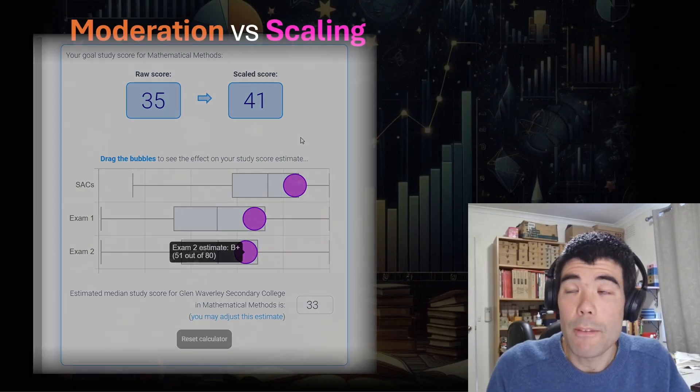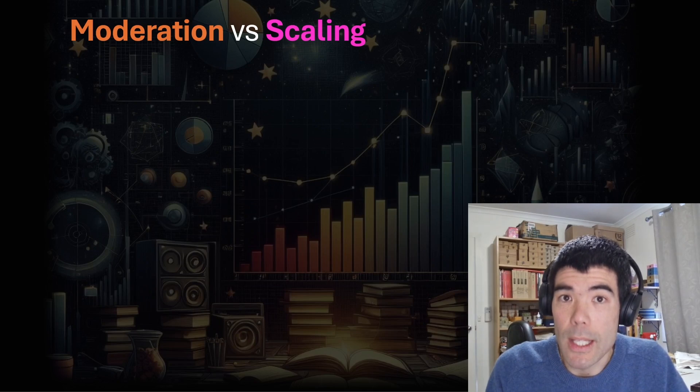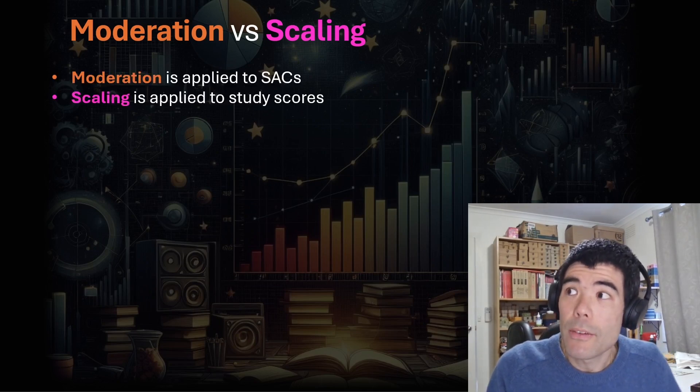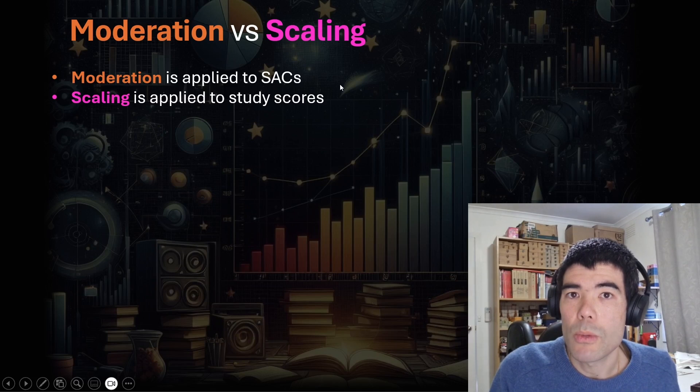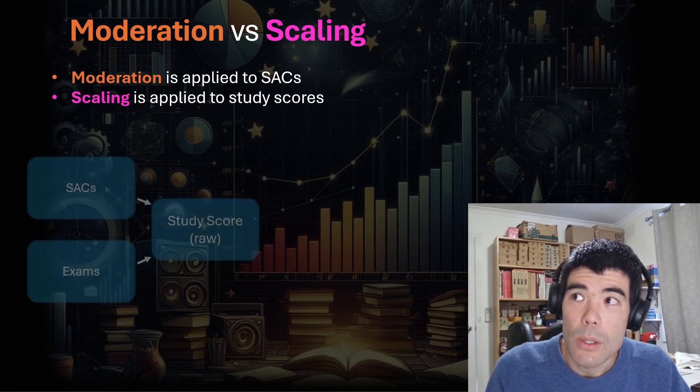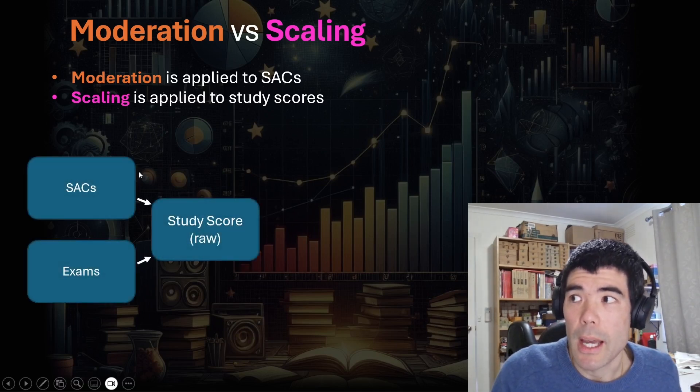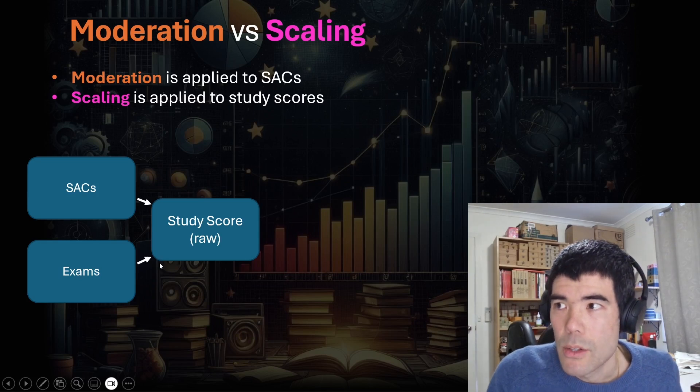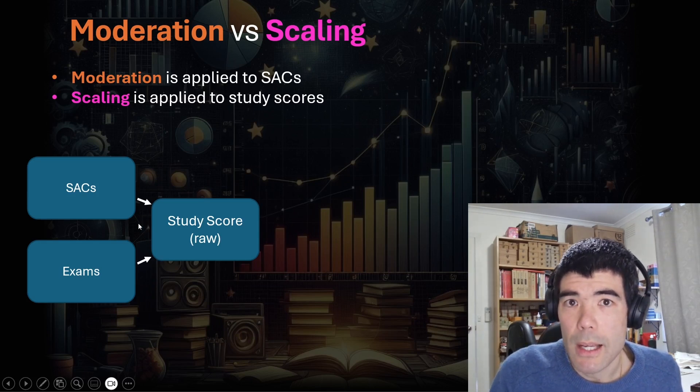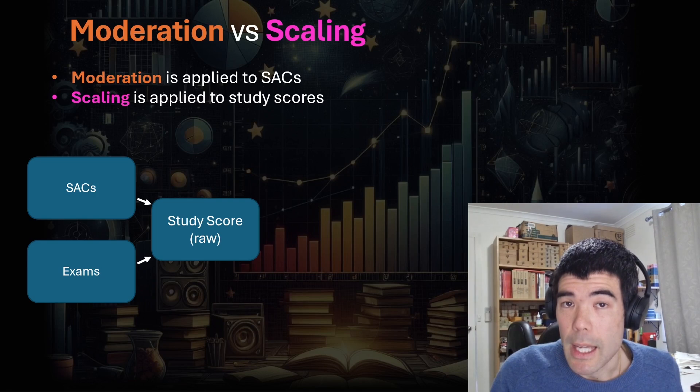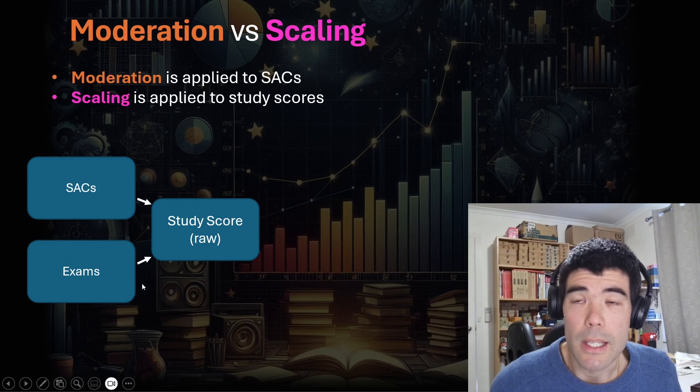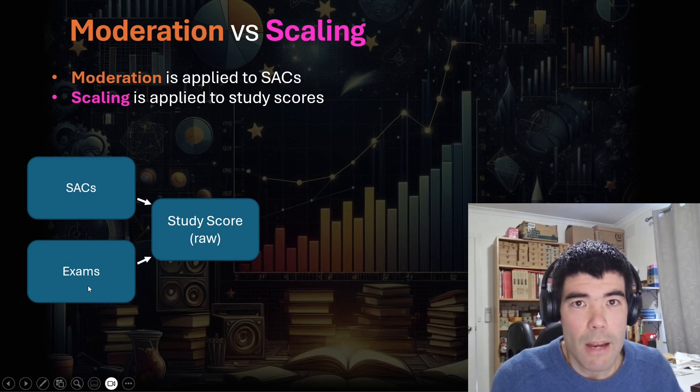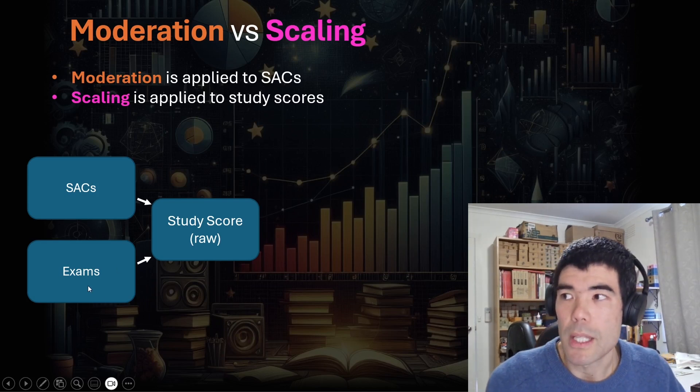Let's start with that first question about moderation versus scaling and what is the difference. The main difference is that moderation is applied to your SACs, whereas scaling is applied to the study score once your study score has been calculated based on your SACs and your exams. So for every subject, you'll sit some SACs at school. They're set by your teachers. They can be different at every school. The exams, though, obviously are the same for everyone at the end of the year, set by the VCAA. So there's no need to moderate that because every student sits the same exam on the same day.